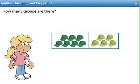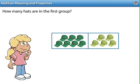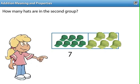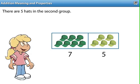How many groups are there? There are two groups. How many hats are in the first group? There are seven hats in the first group. How many hats are in the second group? There are five hats in the second group.